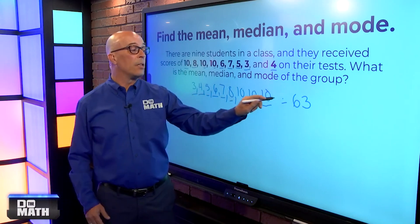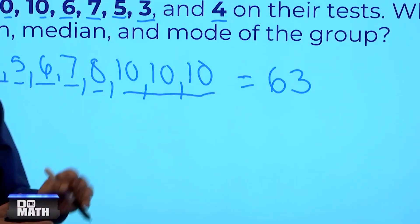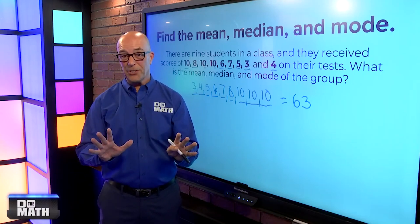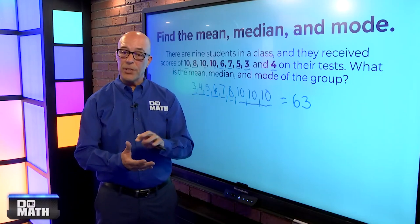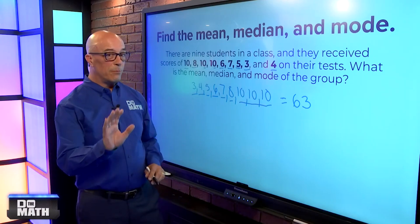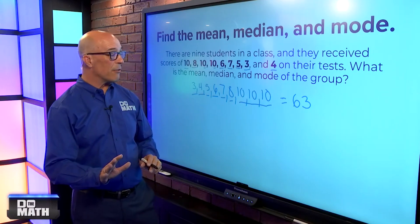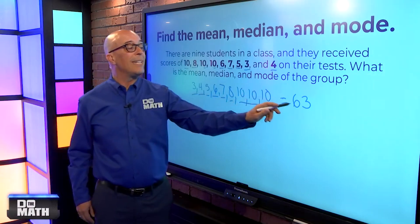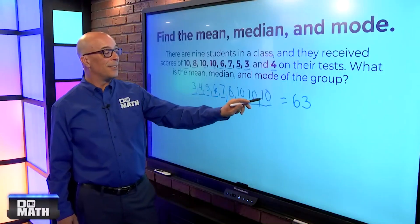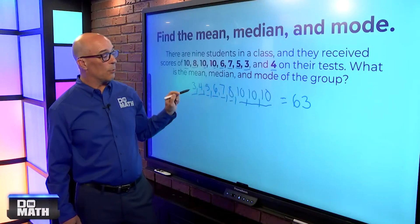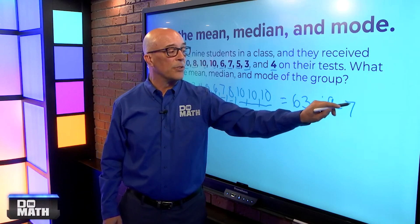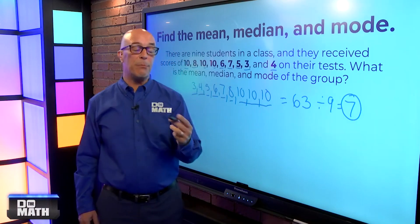Now, one thing I would caution you about is if you're using a calculator, you want to probably do it one more time. Because I, myself, and I'm sure everybody else has, if you're putting numbers into a calculator quickly, sometimes you might hit the wrong one. So, just double-check it to make sure you've got 63. We need the average of the total divided by the number of data set. So, we have 9. So, we're going to go 63 divided by 9 is going to be equal to 7. So, 7 is the mean.